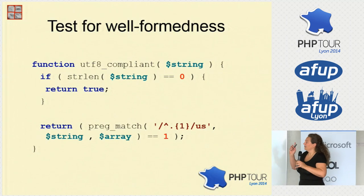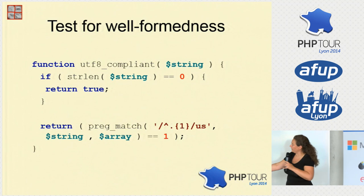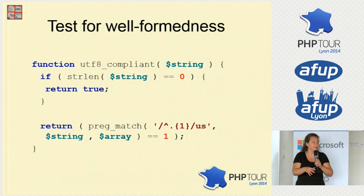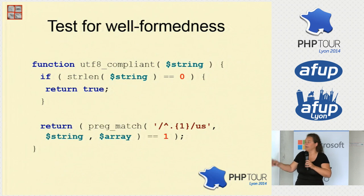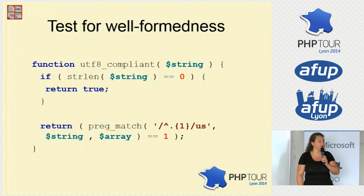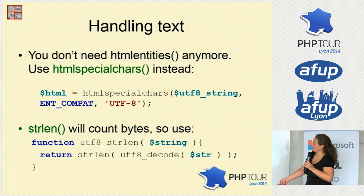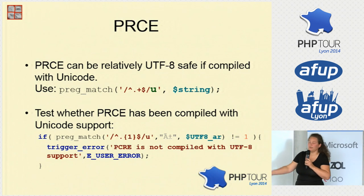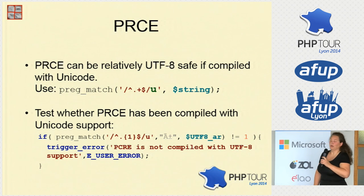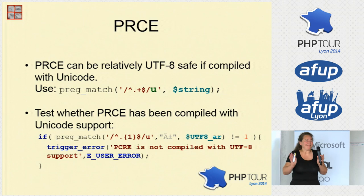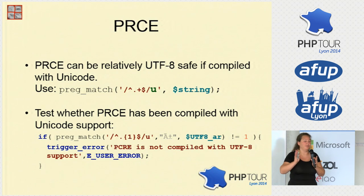We always need to test for well-formedness. Why test only for the first character? If the first character doesn't match, nothing will match; if it does, it will be UTF-8. This is the test to check whether you have a well-formed UTF-8 string. Notice the U at the end — that means Unicode. PCRE can be used with Unicode as long as it's compiled with Unicode support. There's a little function here to check whether PCRE has been compiled with Unicode, because not every installed version has been. Make sure you test for that before using the U flag — otherwise you might end up with corrupted strings.